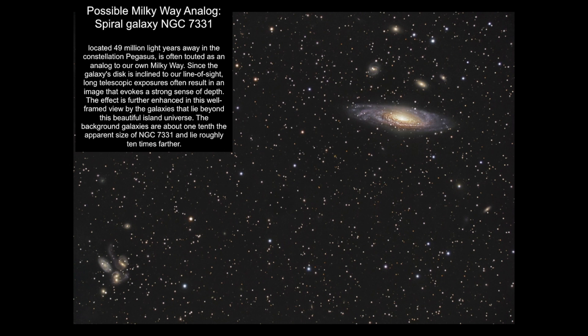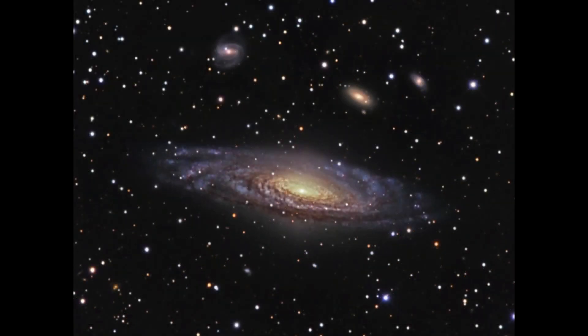Another possible Milky Way analog is NGC 7331, the spiral galaxy in the upper right — not the little neighbors next to it. The lower left is Stephan's Quintet, a group of galaxies we'll talk about later. NGC 7331 is very similar to our Milky Way, seen nearly edge-on about 49 million light years away. The little galaxies above it are about 10 times smaller and 10 times further away — not part of this system. If we looked at our Milky Way close up, this is probably what we'd see: dusty spiral arms punctuated by pink glows of hydrogen gas clouds illuminated by stars.